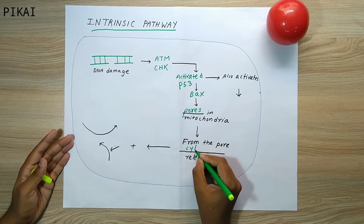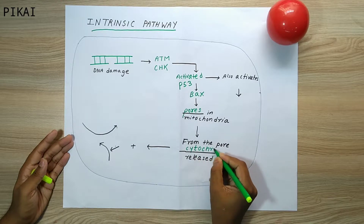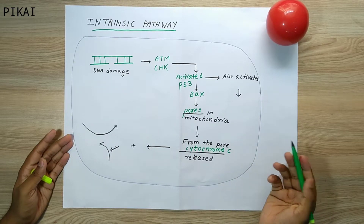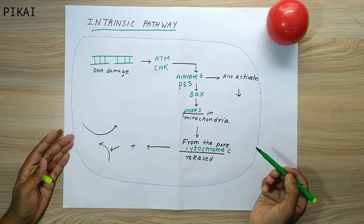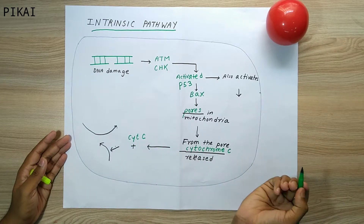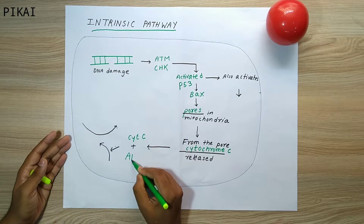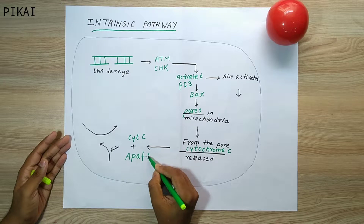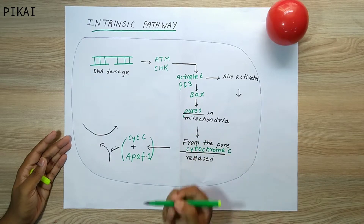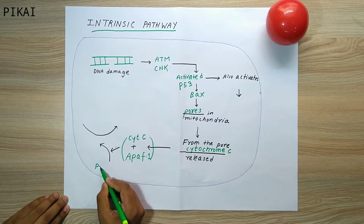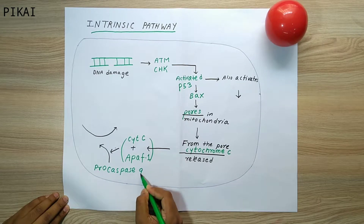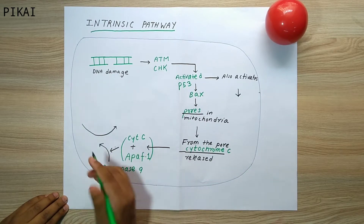Through these pores, cytochrome C, which is present inside the mitochondria, leaks out into the cytosol. After cytochrome C is released from the mitochondria into the cytosol, it combines with a protein known as APAF-1. Together, cytochrome C and APAF-1 convert the inactive pro-caspase 9 into active caspase 9.